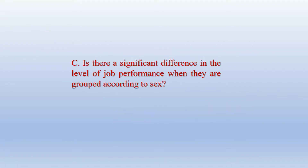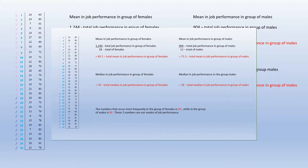Problem number three: is there a significant difference in the level of job performance when they are grouped according to sex? The process of the solution is the same as the second problem — get the mean, the median, and the mode of job performance for both males and females, to know whether job performance is significantly affected when grouped by sex. The solution process does not need further explanation as it follows the same steps as the first and second problems.